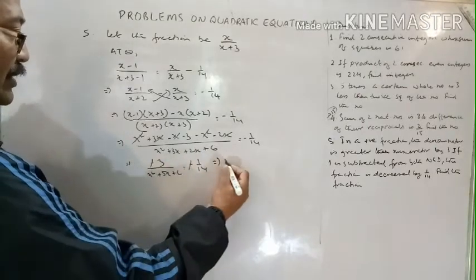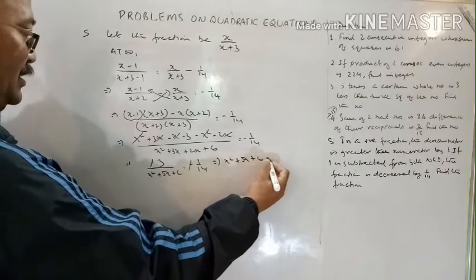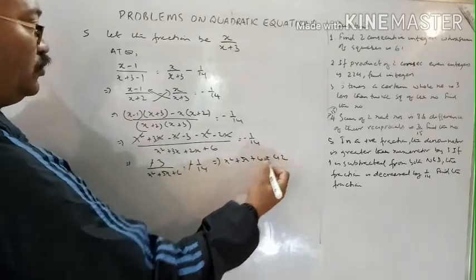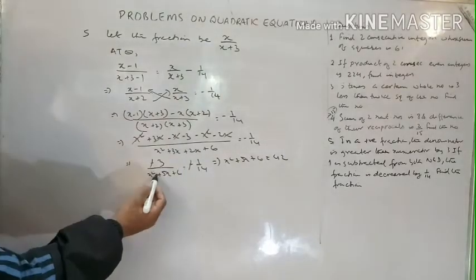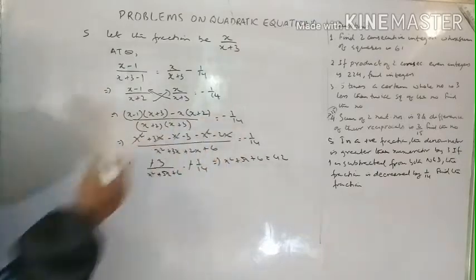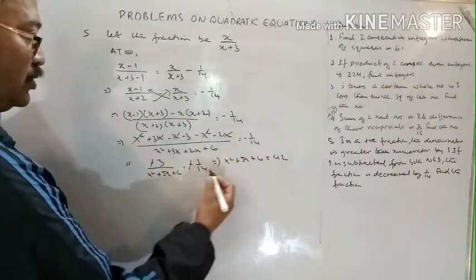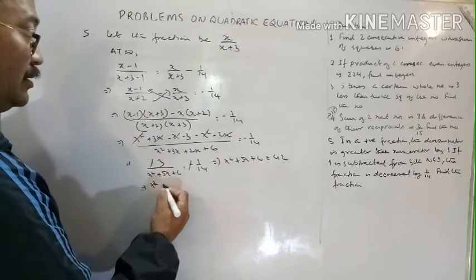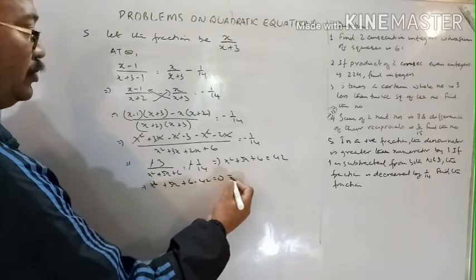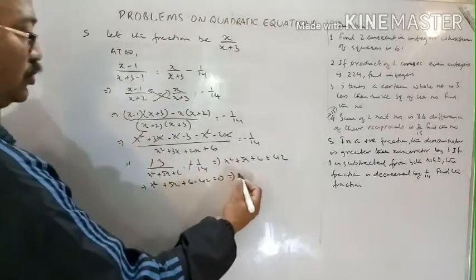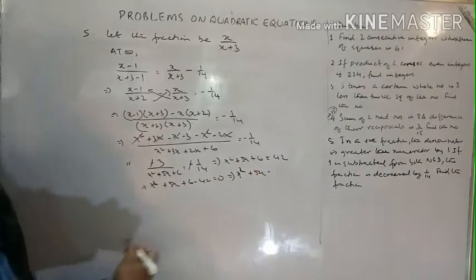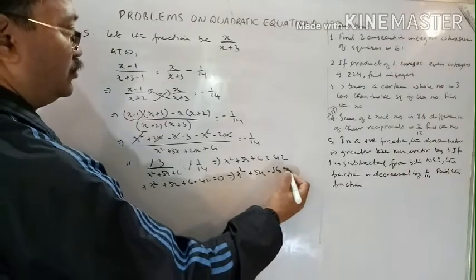The minus signs cancel on both sides. Cross multiplying: x squared plus 5x plus 6 equals 42. Bringing 42 to the left: x squared plus 5x plus 6 minus 42 equals 0, giving x squared plus 5x minus 36 equals 0.